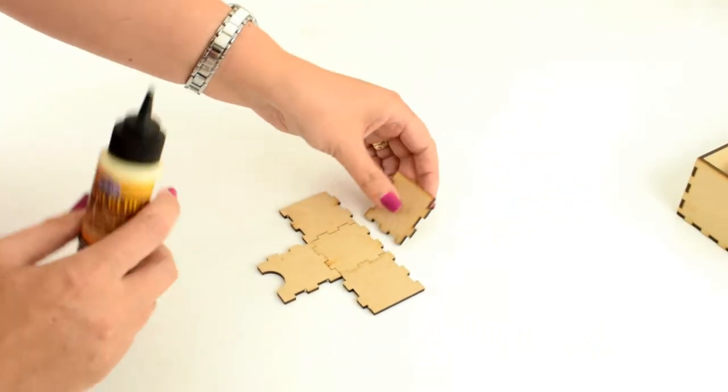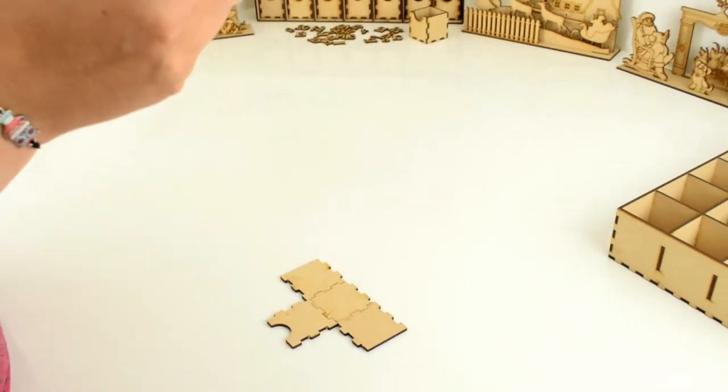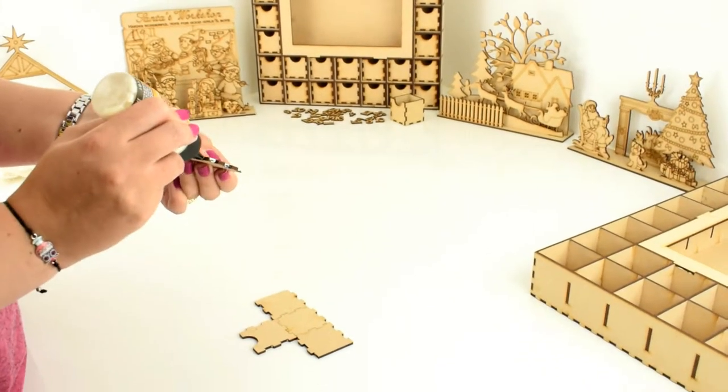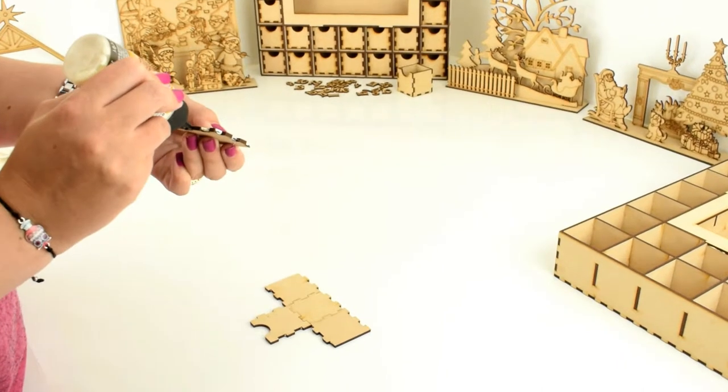Once done you want to take your wood glue and apply this to the lower teeth areas on all of the pieces. Almost done.